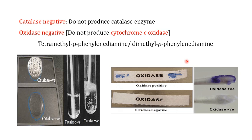Clostridium perfringens are catalase-negative, meaning they do not produce the catalase enzyme. In the catalase test, a catalase-positive organism produces bubble-like structures when exposed to hydrogen peroxide. Since Clostridium perfringens is catalase-negative, no bubbles are produced when exposed to hydrogen peroxide.